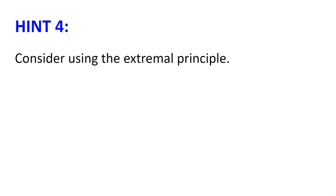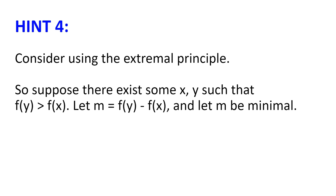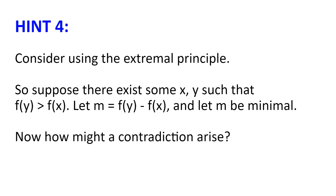Hint number four. Consider using the extremal principle. Suppose there exists some x and y such that f of y is greater than f of x, and let m equal f of y minus f of x, and let m be minimal. So take the smallest positive integer m for which there exist x and y satisfying m equal to f of y minus f of x. Now how might a contradiction arise?